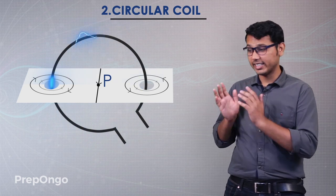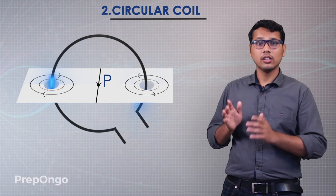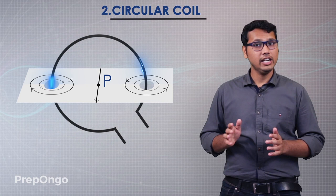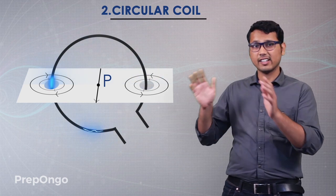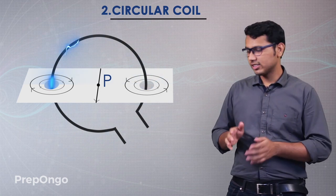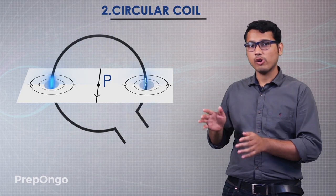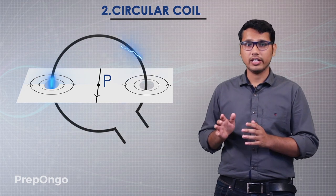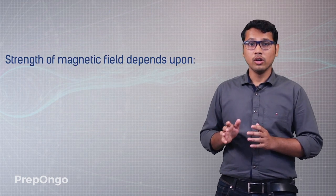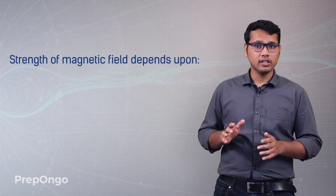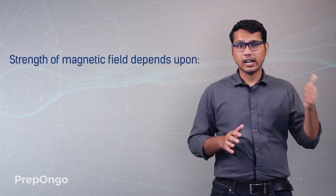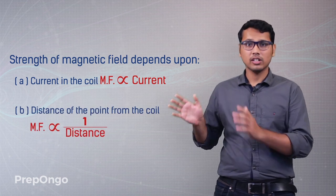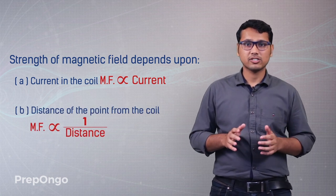At the center of the coil, the magnetic field is in straight lines. The magnetic field lines due to this circular coil look something like this — you should remember how the magnetic field due to a circular coil looks. The strength of the magnetic field again depends on the current in the coil and the distance of the point from the coil.